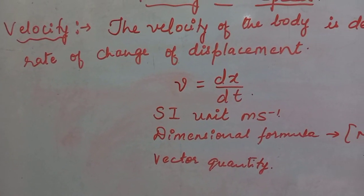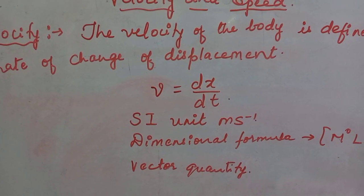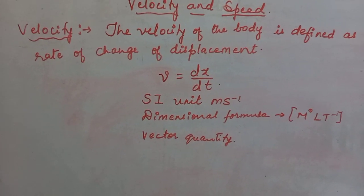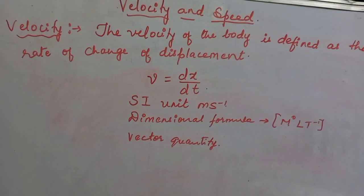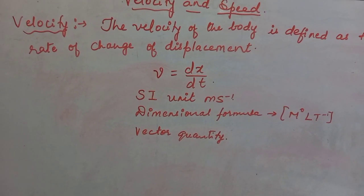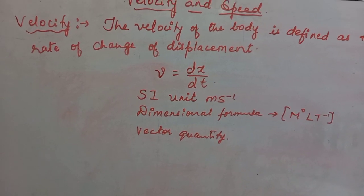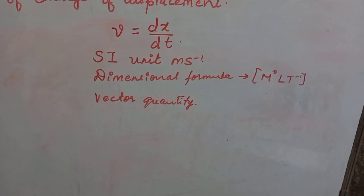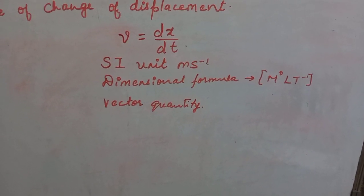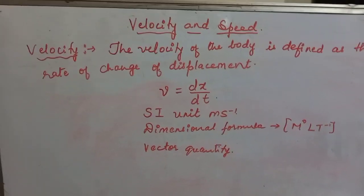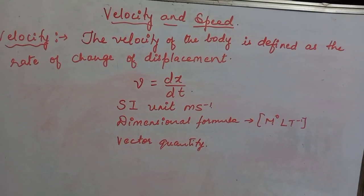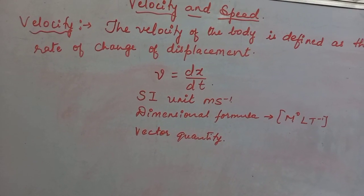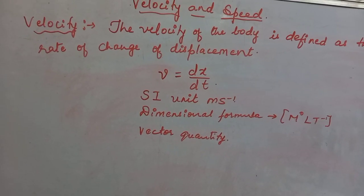The velocity of a body is defined as the rate of change of displacement. The formula is v = dx/dt. The SI unit is meters per second, the dimensional formula is M⁰LT⁻¹, and it is a vector quantity. In velocity we have types: uniform velocity, average velocity, and instantaneous velocity.